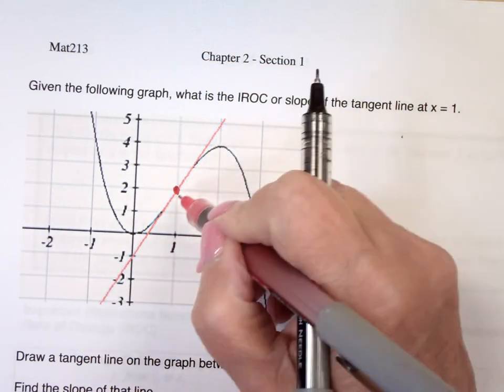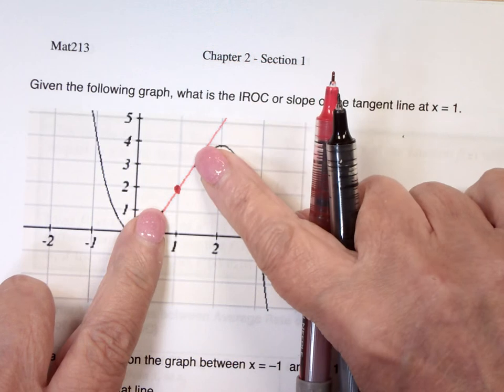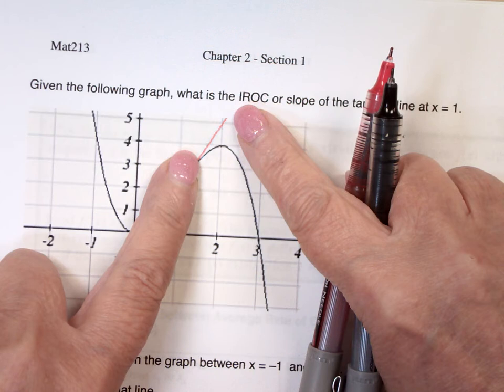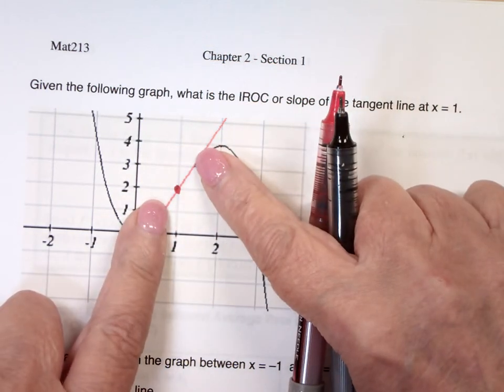Then I draw the tangent line, and if you notice, the graph and the tangent line look like the same thing around x equal 1. I get away from it, they're different. But here, they look like they're about the same.